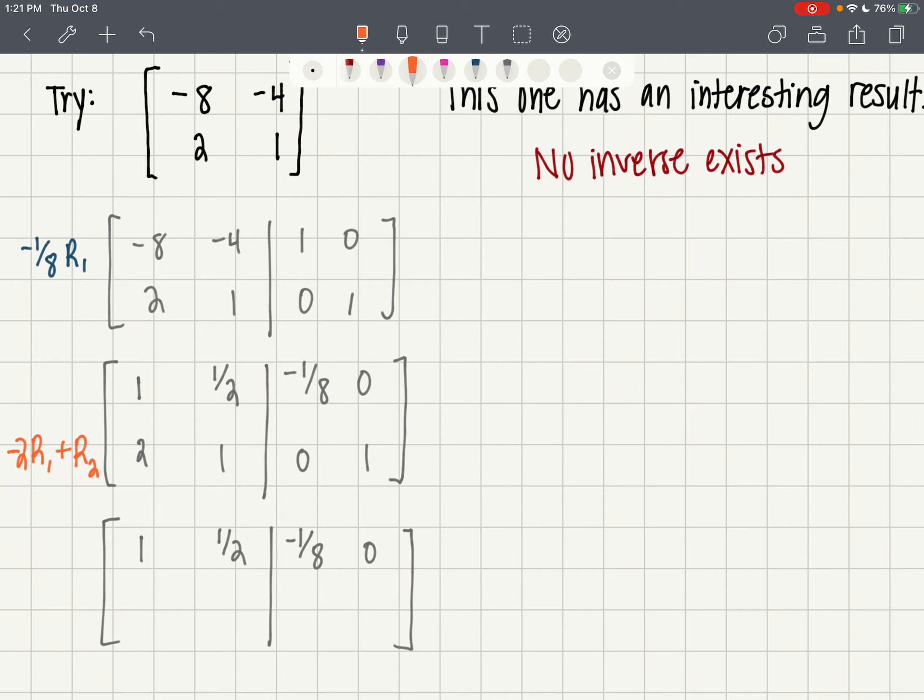And row two: negative two times one is negative two, plus two is zero. Negative two times one-half is negative one, negative one plus one is zero. Negative two times negative one-eighth is one-fourth, plus zero is one-fourth. Negative two times zero is zero, plus one is one.